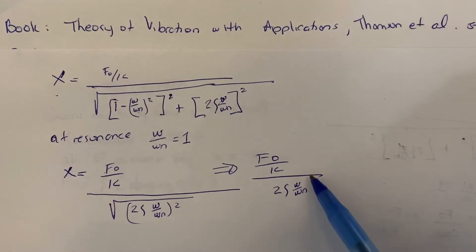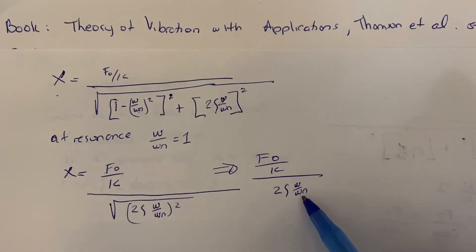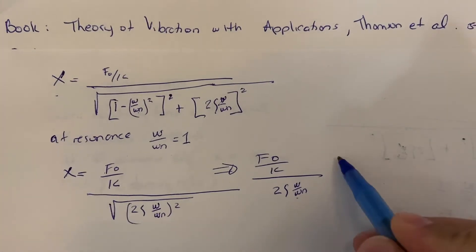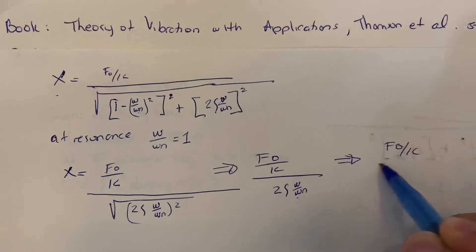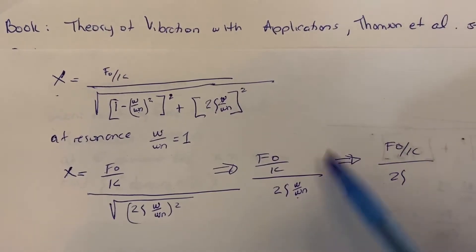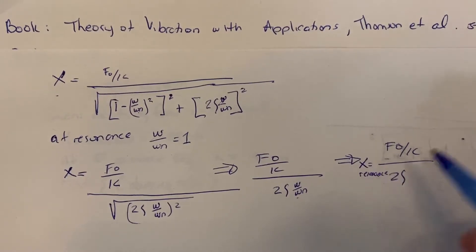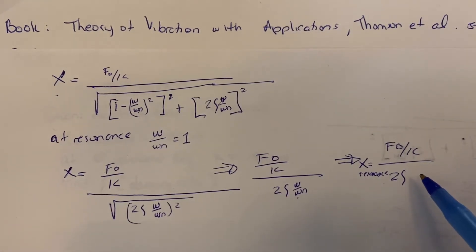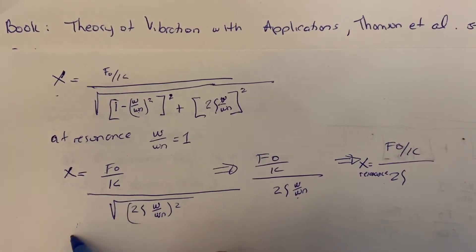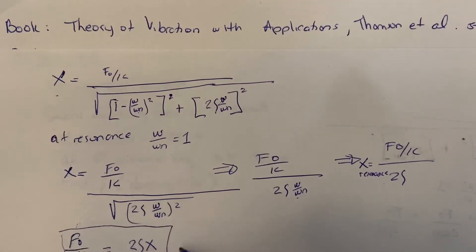Since we are solving for resonance, we note that the W over Wn term equals 1, and we end up with a simplified expression relating the amplitude at resonance to the system parameters. Rearranging, we get F0 over k equals 2 times damping ratio times x. Let's call this Equation 1.